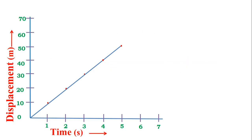The body is moving with uniform velocity. On the y-axis there is displacement, and on the x-axis there is time, because this is a displacement-time graph. This is the motion of uniform velocity.